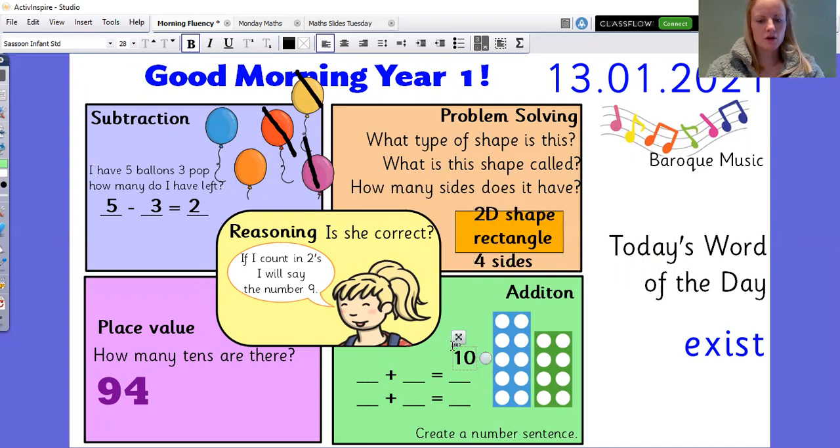Then here with the numicon. I know that that blue one is 10. So I've got 10 plus 8 equals 18. Or it could be written the other way around. Let me get it in line. 8 plus 10 equals 18. Fantastic.